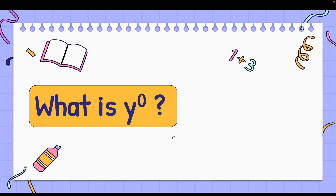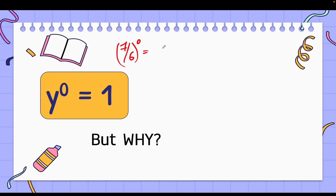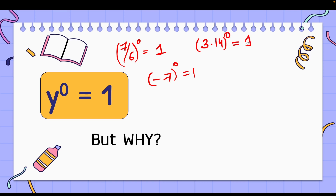Now what is y to the power 0? We all know that y to the power 0 is 1. In fact, any number to the power 0 is 1. For example, 7/6 to the power 0 is 1, minus 7 to the power 0 is 1, and even 3.14 to the power 0 is also 1. But the main important question is: why is it so?